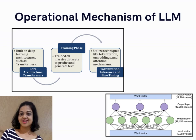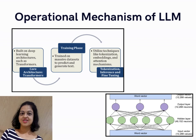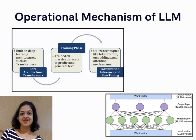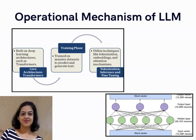The third phase covers tokenization, inference, and fine-tuning. Tokenization breaks text input into smaller units called tokens — words, subwords, or characters — which the model can process. Tokens are then converted into numerical representations called embeddings to be input into the model. After training, the model uses its learned knowledge to generate responses, make predictions, or complete tasks during inference. Fine-tuning adapts the model on specific datasets to optimize it for particular use cases, like customer support or medical advice.